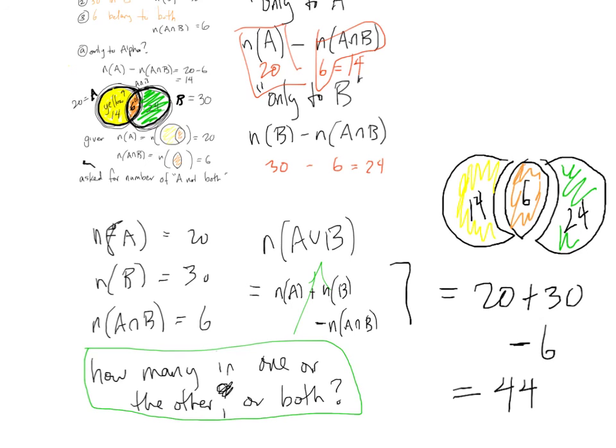Then we're asked how many live in only one of the two but not both. Well, now that we've done all this work, we can see, well, it's 14 plus 24. These are exactly the regions of people who belong to only one club. Six belong to both. Now, finally, the question is, how many people are there total? And the answer is 44.